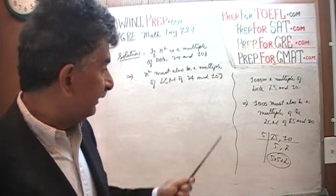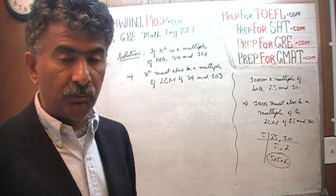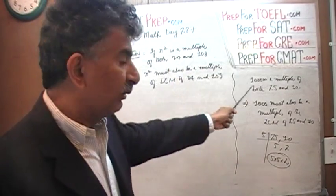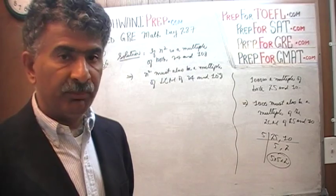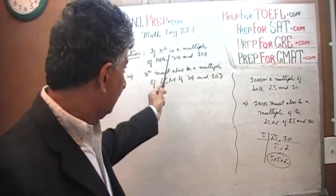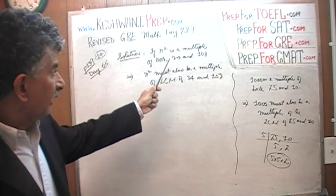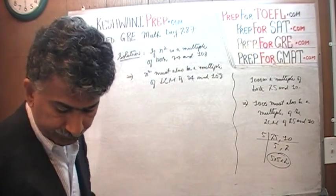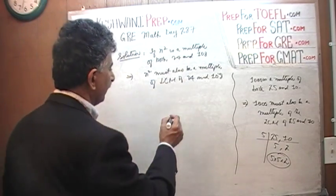If you're lost at this point and don't understand the transition from that step, you need to watch yesterday's video — I'm not going to re-explain everything. We already did that yesterday. So what is the least common multiple of 24 and 108?